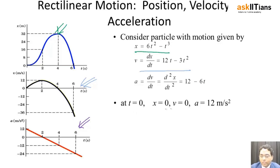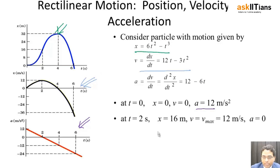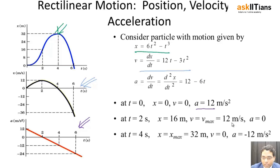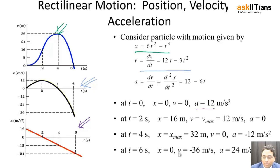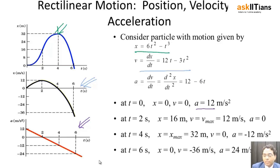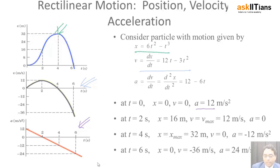For time t equals 0, we get the initial values. At time t equals 2, the velocity is 12 meters per second. At time t equals 4, the acceleration comes out to be negative, and at time t equals 6, it is equal to 24 meters per second squared. Plotting this, it comes out uniformly.